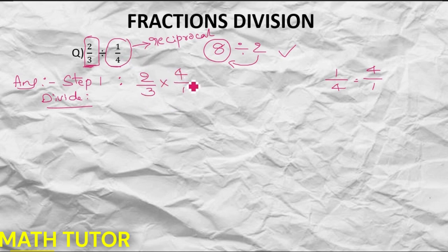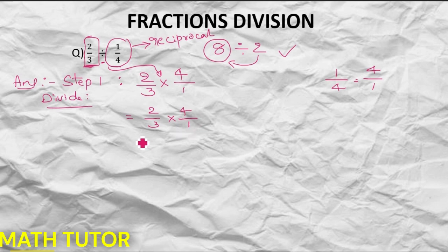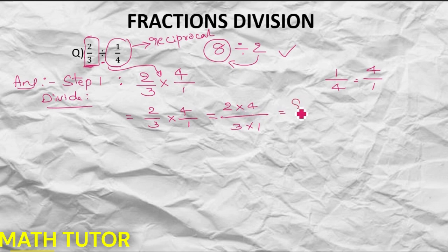In division, we find the reciprocal of the second fraction and the division symbol becomes multiplication. Now after doing this it turns into a multiplication question. You already know how to do multiplication — multiply both the numerators and multiply both the denominators. The answer will be 2 times 4 equals 8, by 3.